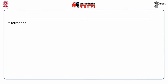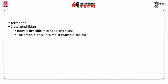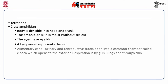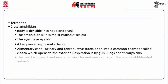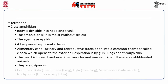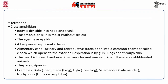Class tetrapoda includes amphibians. The body is divisible into head and trunk. The amphibian skin is moist without scales. The eyes have eyelids. A tympanum represents the ear. The alimentary canal, urinary and reproductive tracts open into a common chamber called the cloaca. Respiration is by gills, lungs and through the skin. The heart is three-chambered — two auricles and one ventricle. These are cold-blooded and oviparous animals. Examples include bufo, rana, hyla, salamandra and ichthyophis.